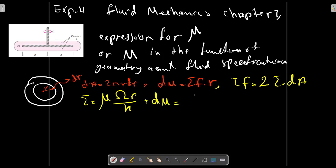dm equals 2μ omega r over h multiplied by sigma rf, which is 2πr dr.